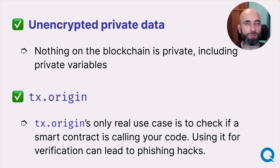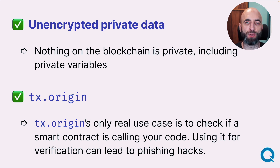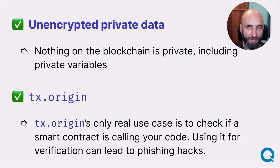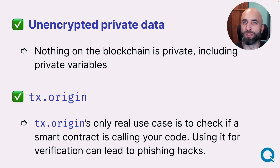The first thing to keep in mind is that nothing on the blockchain is private. Even if you have private variables in your smart contract, there is always a way to see their value on the blockchain. In this context, private only means that only your contract can access it — not that no one can see it.